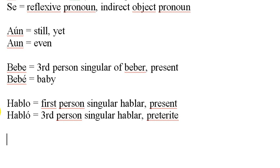The next one is where the accent mark actually changes the pronunciation of the words, which is why it's more important here. 'Bebe' is the third person singular — he, she, usted — form of the verb beber in the present tense. For example, 'mi amigo bebe la leche' means my friend drinks the milk. The other word, 'bebé' with the accent mark, means baby. So if you wanted to say the baby drinks the milk, you could put them together: 'El bebé bebe la leche.' You'll notice the stress of the word moves depending on whether the accent mark is there.